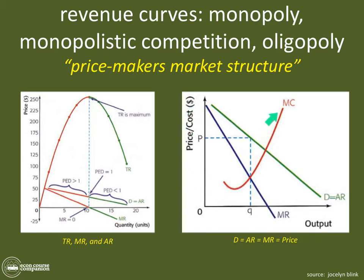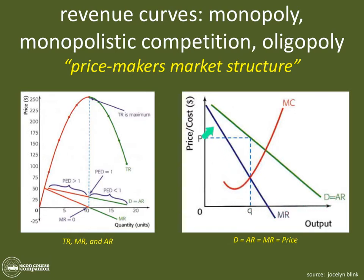When drawing the revenue curves for price makers, you set up a diagram with price and cost on the vertical axis and output on the horizontal axis. You draw a downward-sloping demand curve — where demand equals average revenue — and then the marginal revenue curve, which because of the relationship between marginal and average, always descends at twice the rate of the average revenue curve. You must draw it so that it goes past zero, because at some point marginal revenue will become negative.